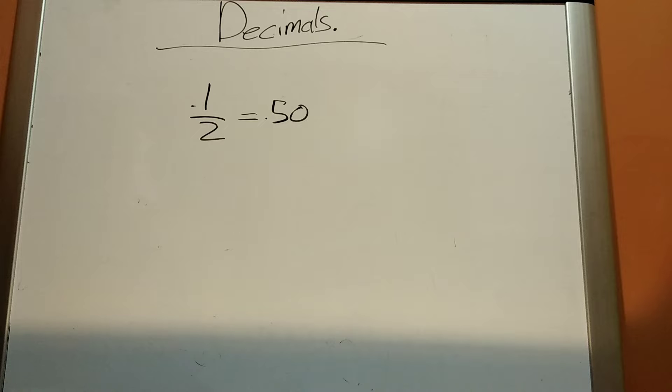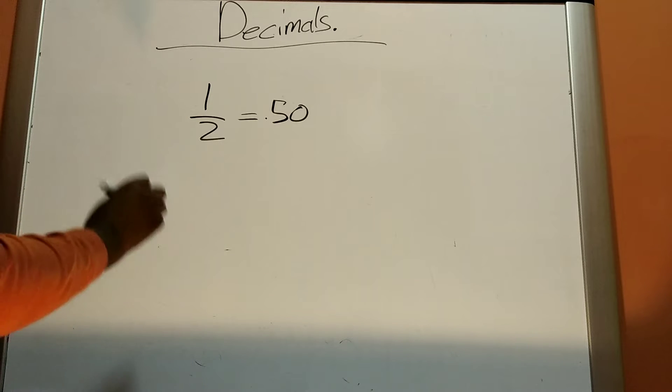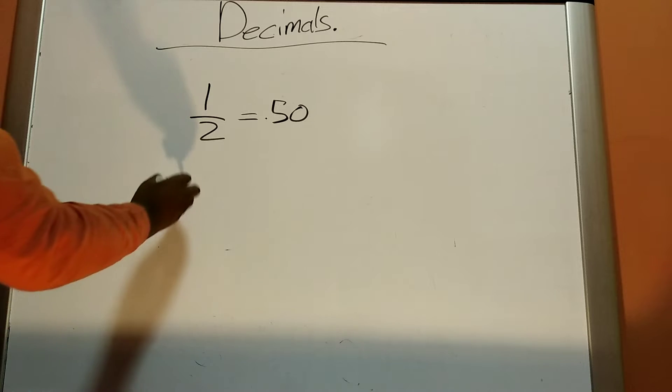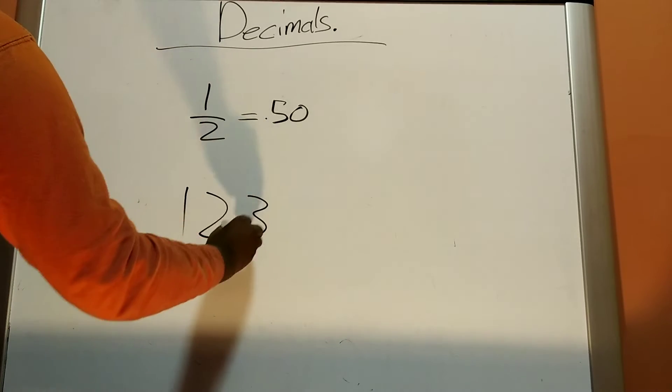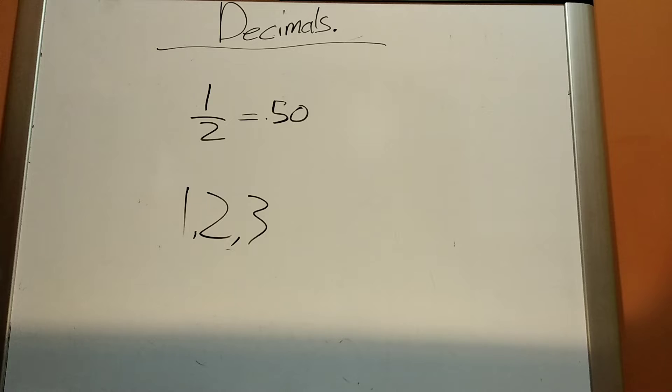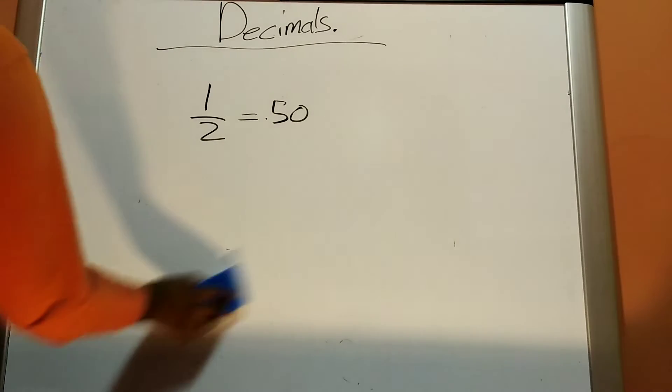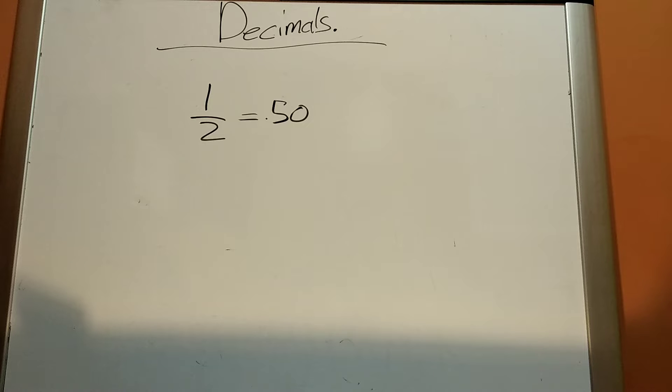Now decimals are usually smaller parts of a number, kind of like a fraction. Let me correct myself there. They're always smaller than a whole number. A decimal is always smaller than a whole number. A whole number is like 1, 2, 3, and so on. But today we'll be talking about decimals, which are usually smaller parts of a number.